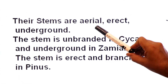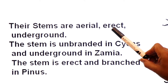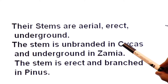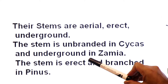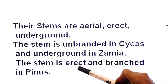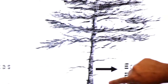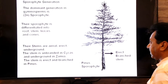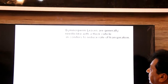Their stems are aerial, above ground, erect, and sometimes underground. The stem is unbranched in Cycas (underground), unbranched in Zamia, and the stem is erect and branched in Pinus. Yeh in ke stem ke characteristics the.